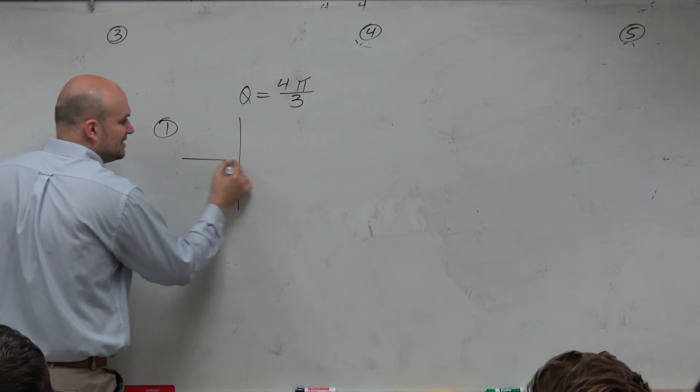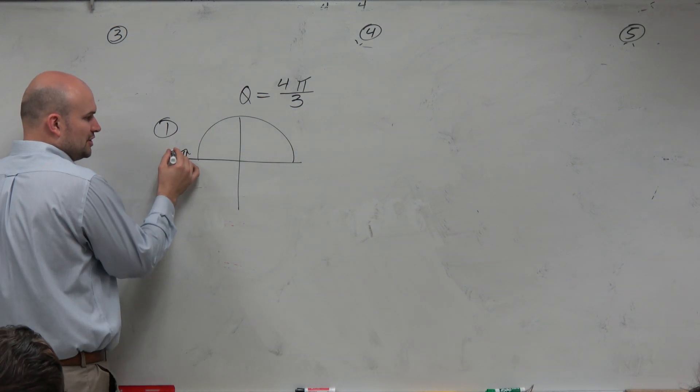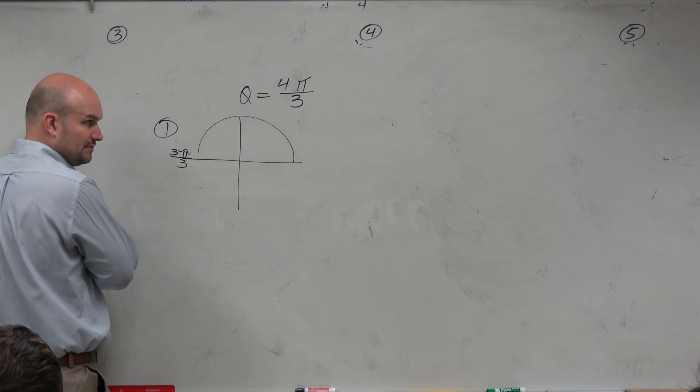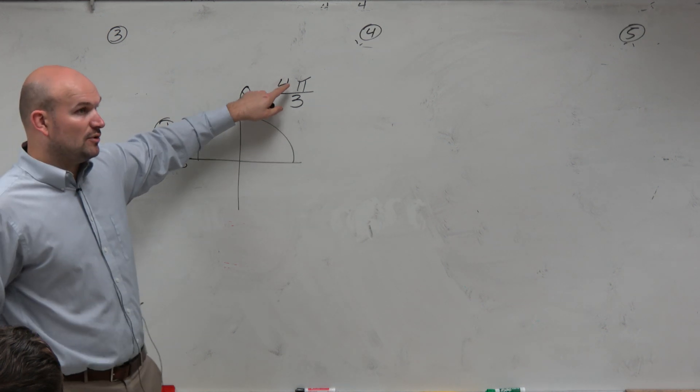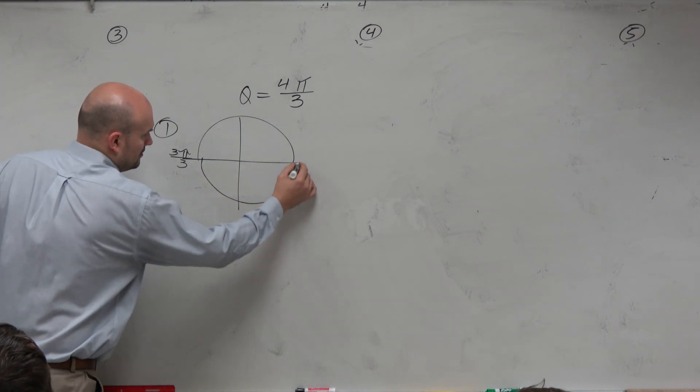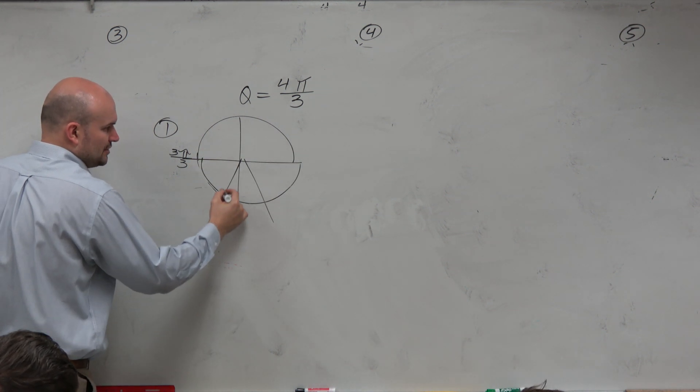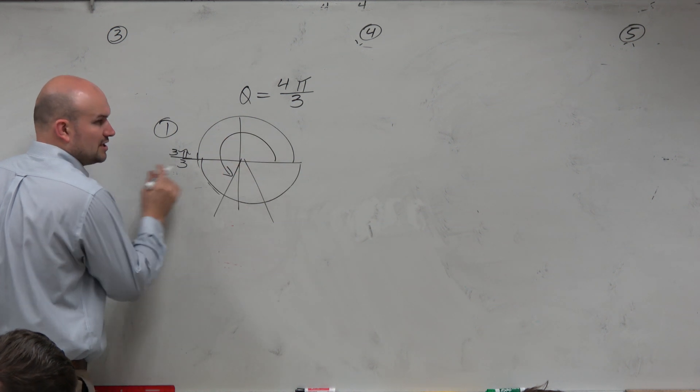But again, I think if we can all agree that half of a circle is π, and if we have our denominator in thirds, we can rewrite that as 3π over 3. So therefore, we understand we're at 4π over 3, which is just an extra third. So here's 3π over 3, and then we just need to go an extra third. So there's our angle.